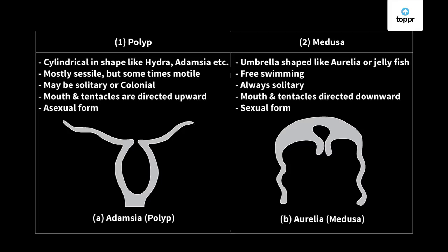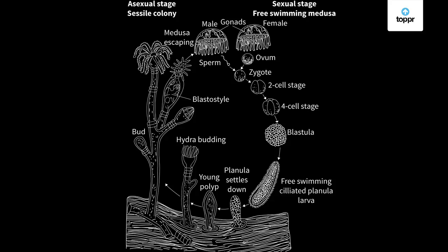Let's look at alternation of generation more closely. The polyp is sessile with a cylindrical stalk and mouth and tentacles facing upward, whereas medusa is a free-floating structure like a jellyfish — a bell or umbrella with mouth and tentacles facing downwards. Taking obelia as an example: during sexual reproduction, medusa liberate gametes into water, releasing male and female gametes.